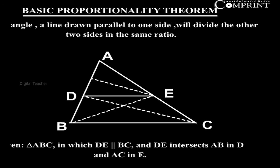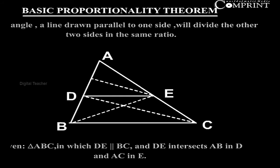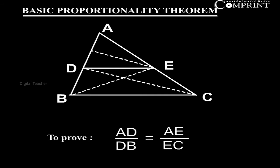Given triangle ABC in which DE parallel to BC and DE intersects AB in D and AC in E. To prove AD by DB equal to AE by EC.